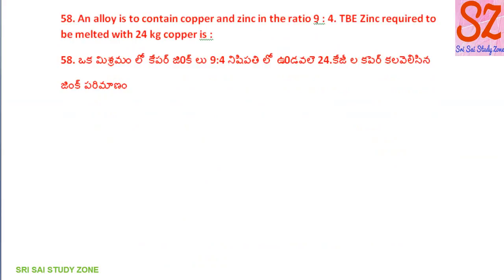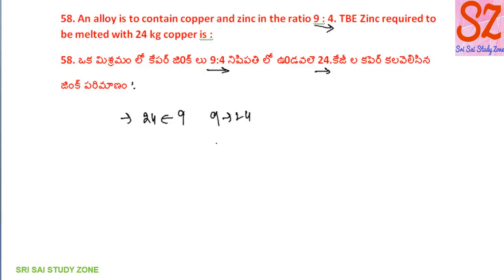An alloy contains copper and zinc in the ratio of 9 is to 4. When there is copper and zinc in ratio 9 is to 4, zinc requires to melt with 24 kg copper. We have 9 parts as 24 kg of copper. So 4 parts zinc equals 24 into 4 by 9, which gives 32 divided by 3.